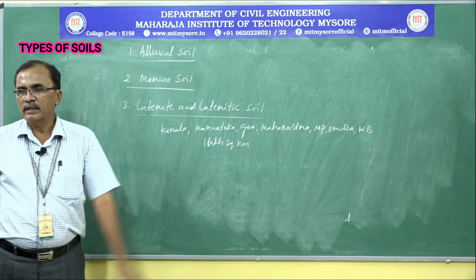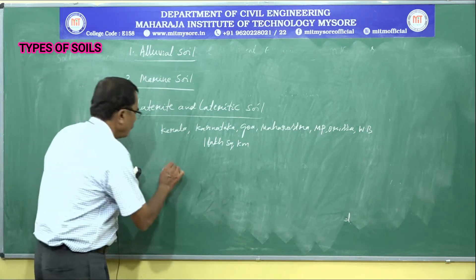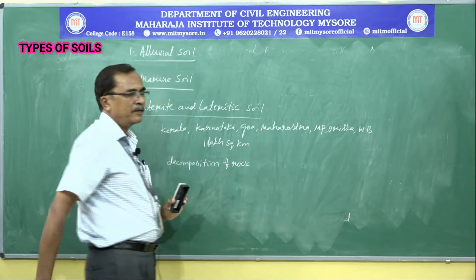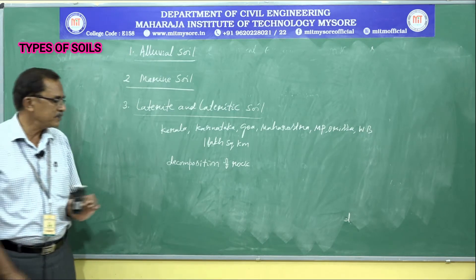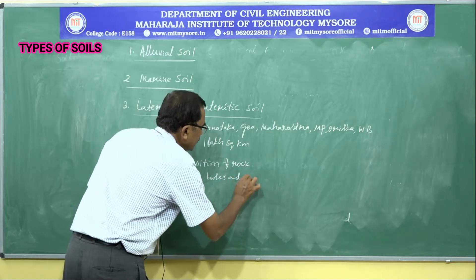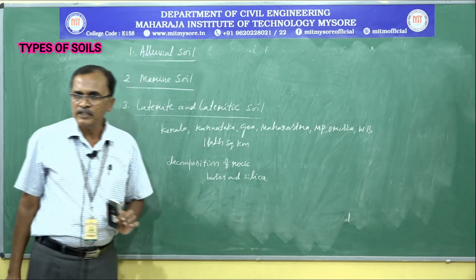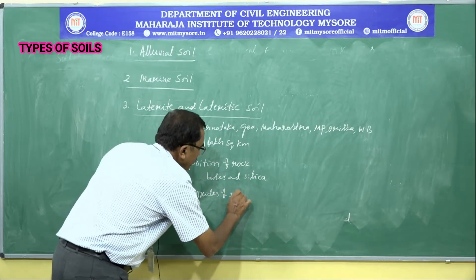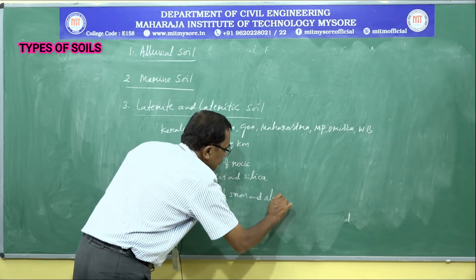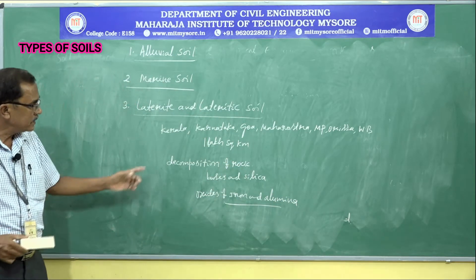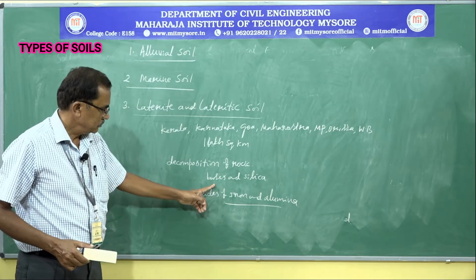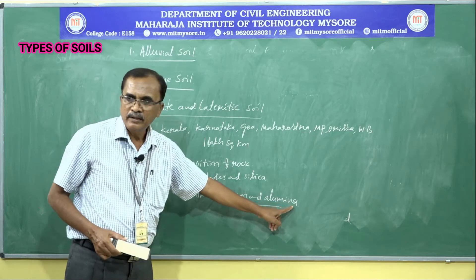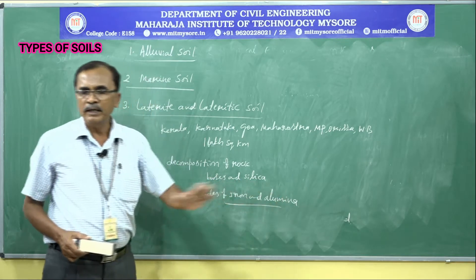Formation of laterite takes place by the decomposition of rocks. After decomposition, removal of bases and silica takes place from the parent rock, leaving behind oxides of iron and alumina. The presence of these oxides of iron and alumina imparts a red color to the soil.